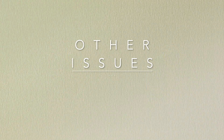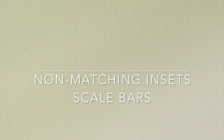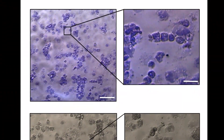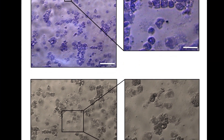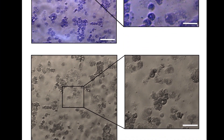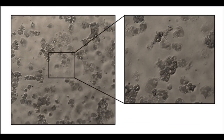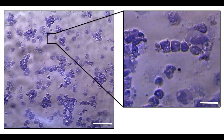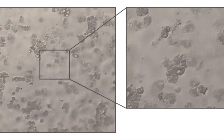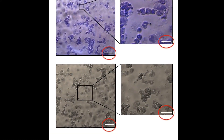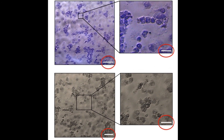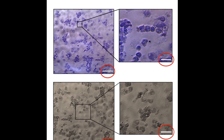Some other problems we repeatedly encounter are non-matching insets and scale bars. In figures showing close-up panels, the enlarged section depicted in the inset should ideally be clearly marked in the corresponding panel. However, we can see here that the panels for the magnified image do not match the section indicated. Sometimes the selection is just marked wrongly, and in some cases the images may not correspond at all. Also remember scale bars — these are sometimes incorrect or even missing altogether. Do watch out for that.